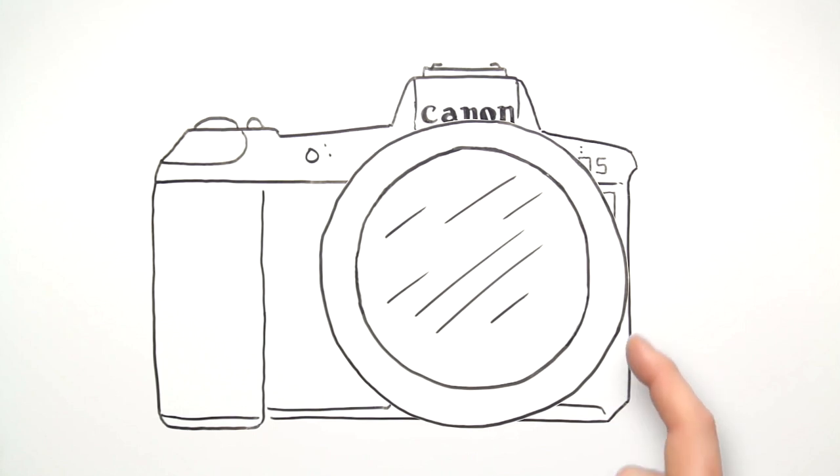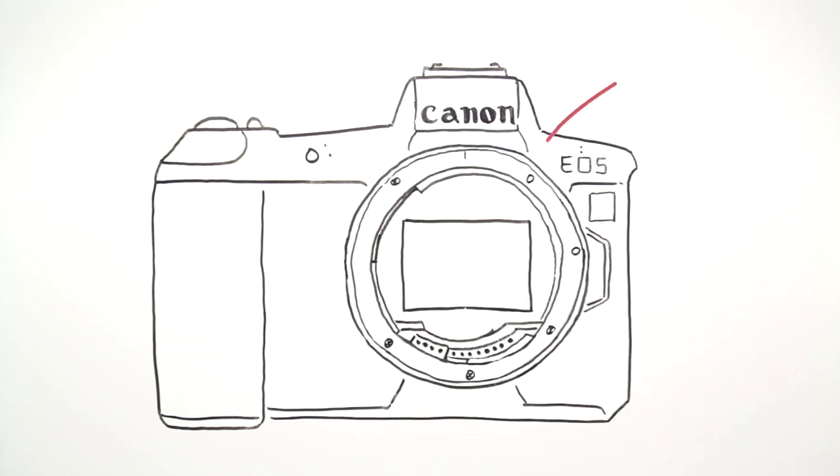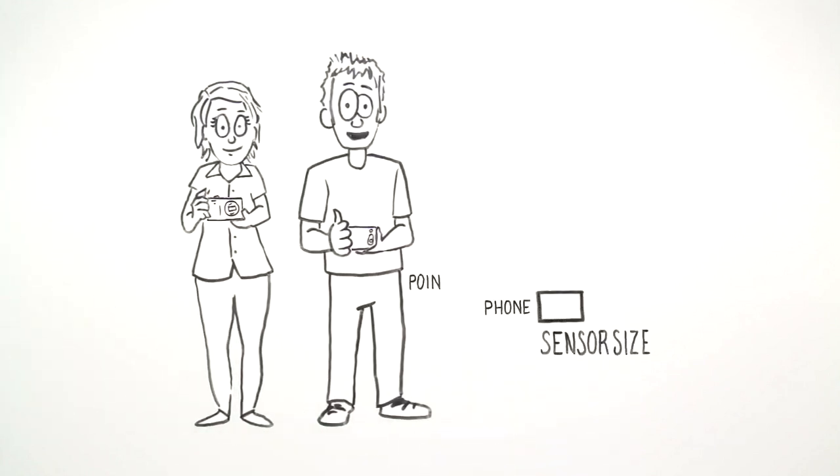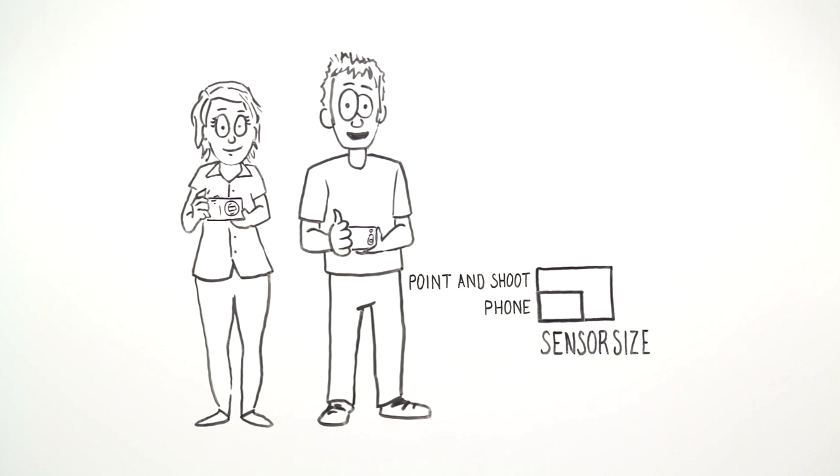When it comes to capturing high-quality images, an important factor is the size of your camera's sensor. Your phone's camera has a relatively small sensor, a basic point-and-shoot camera may have a slightly bigger sensor.